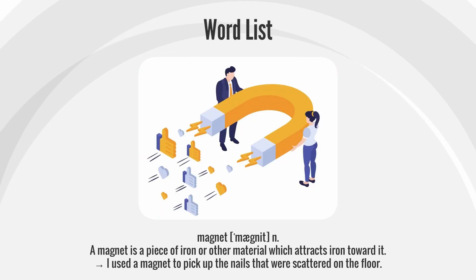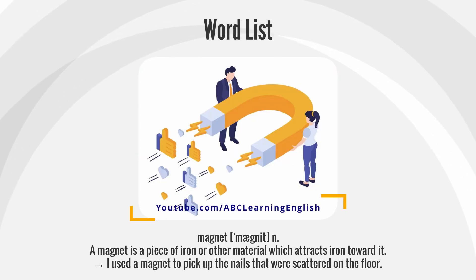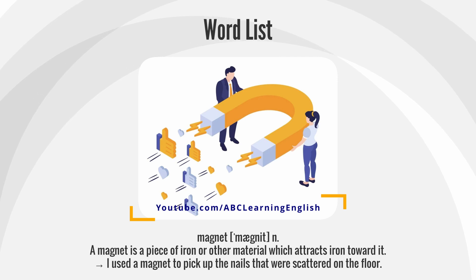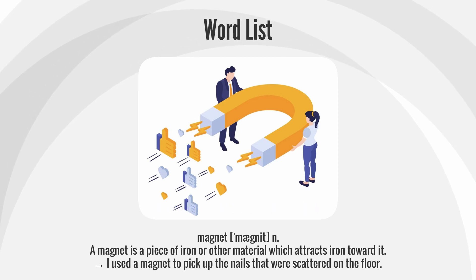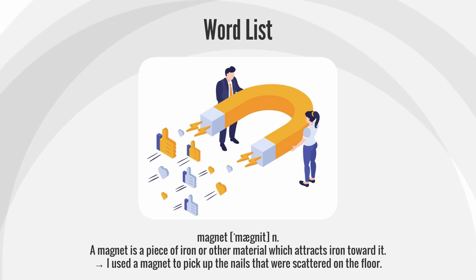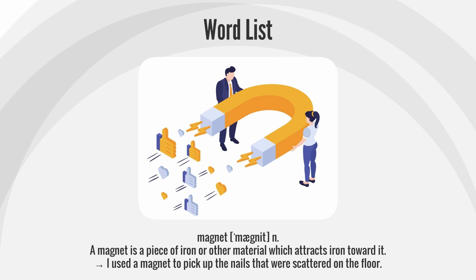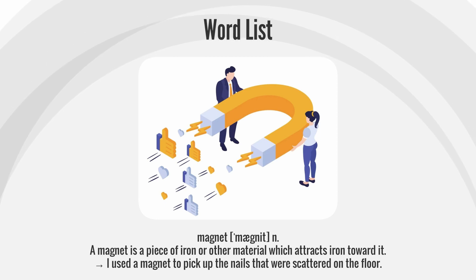Magnet. A magnet is a piece of iron or other material which attracts iron toward it. I used a magnet to pick up the nails that were scattered on the floor.